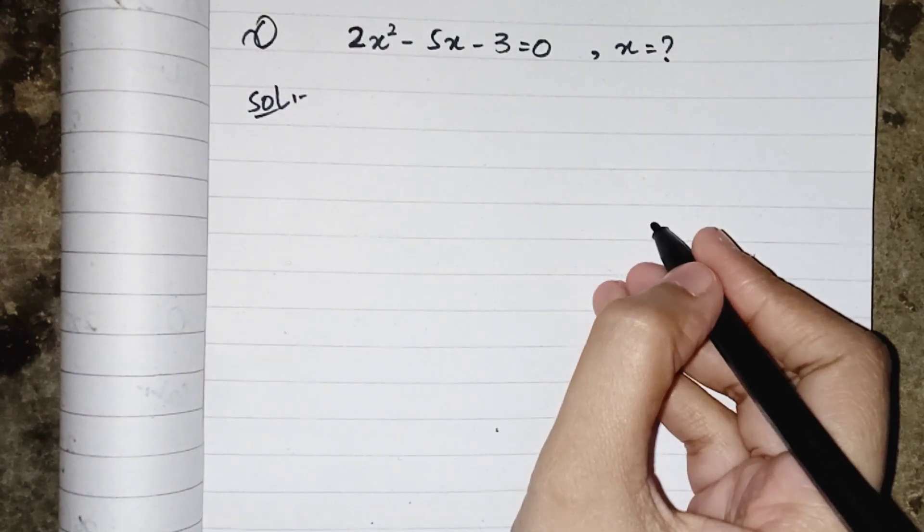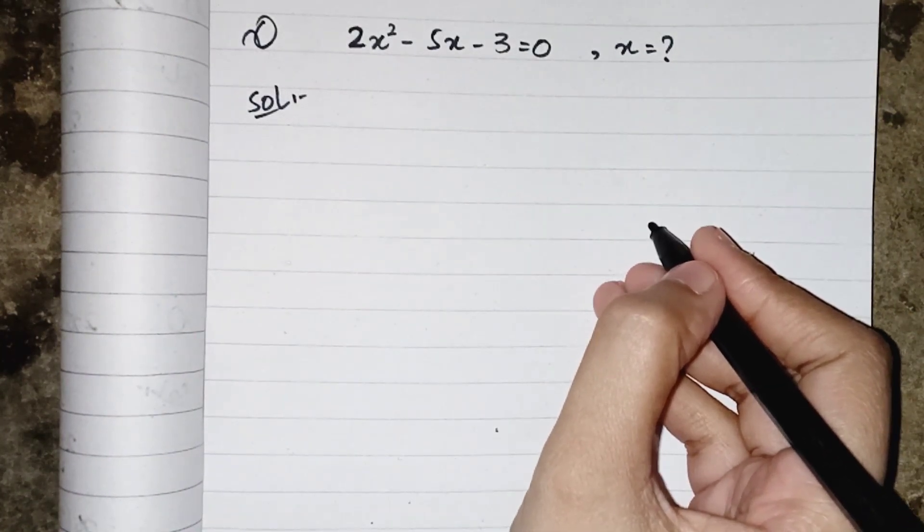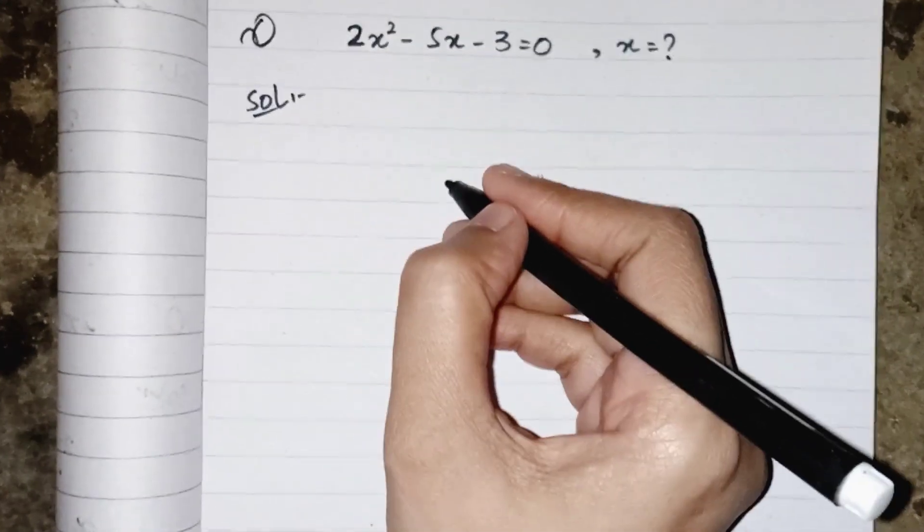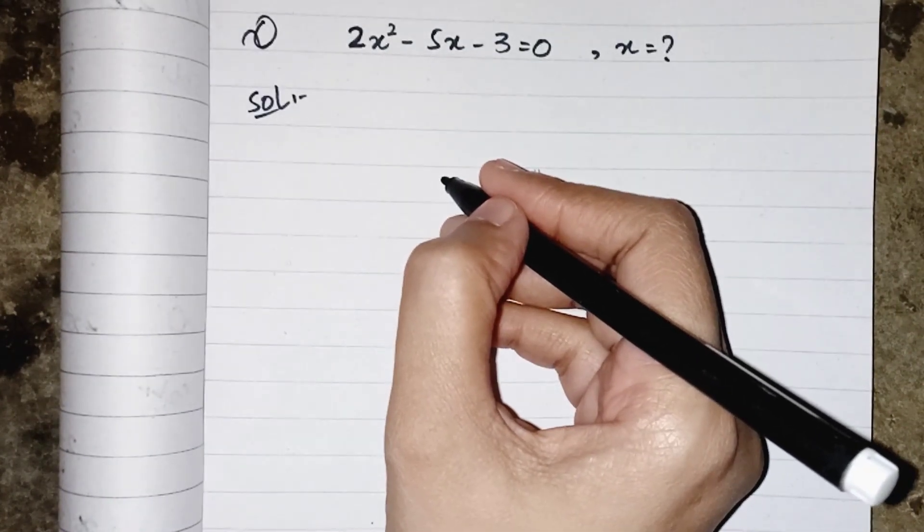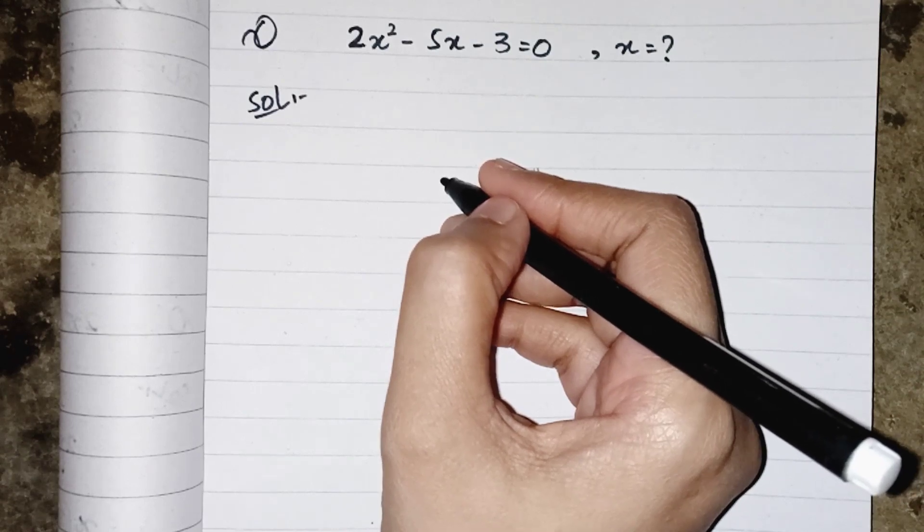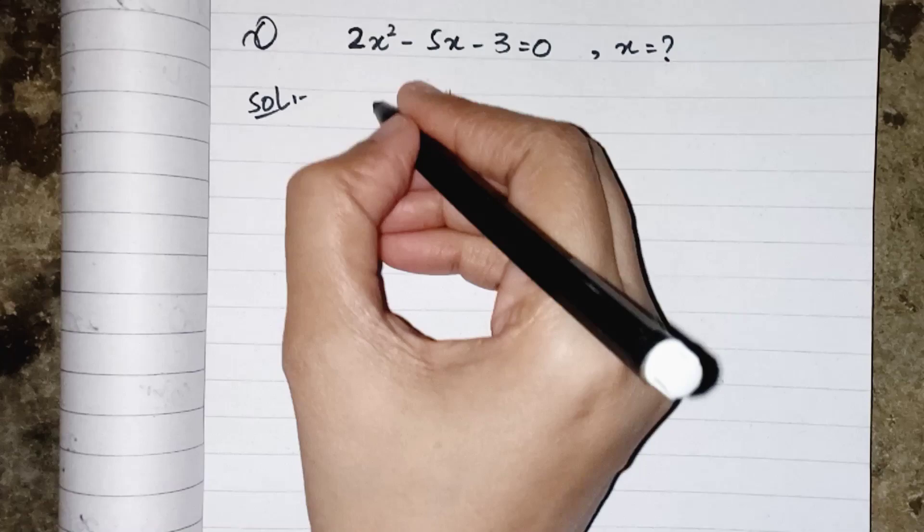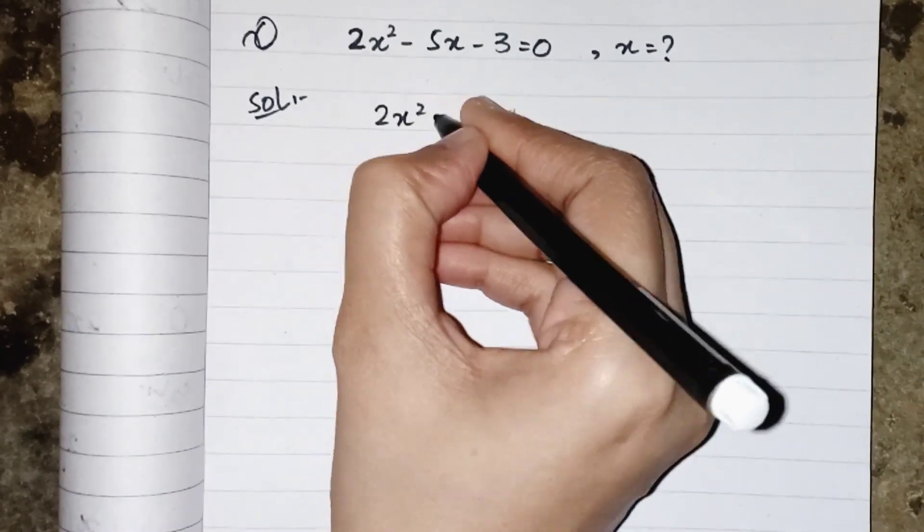Hello everyone, today we are solving this quadratic equation by using factorization method. Factorization method is the simplest or easiest method to find the value of variable in the given quadratic equation. For doing that, we have to multiply the coefficient of first and last term of the quadratic equation.